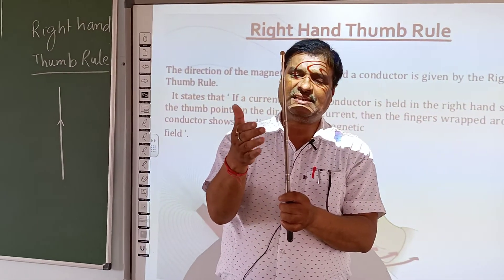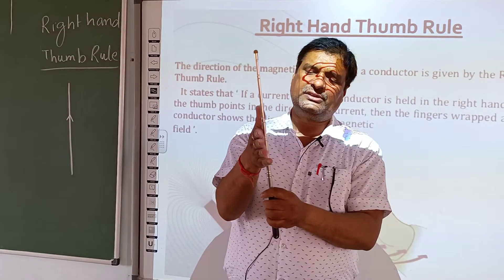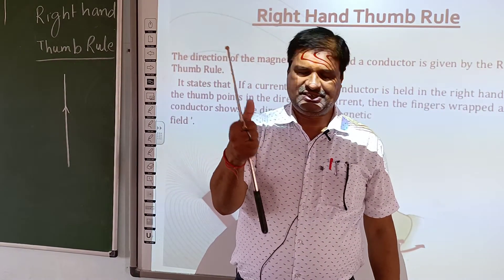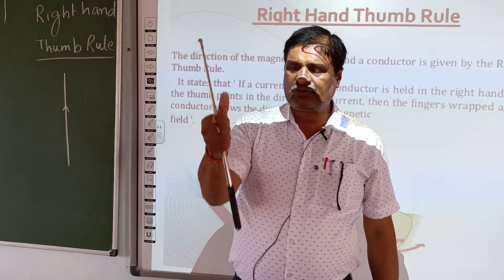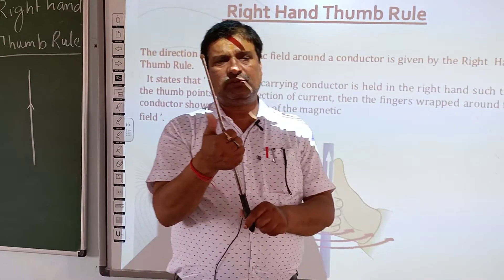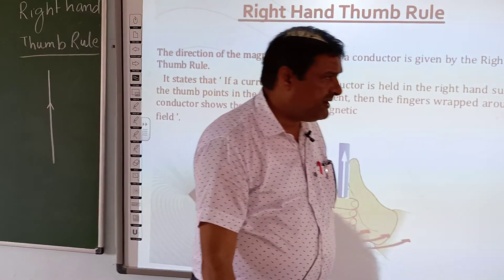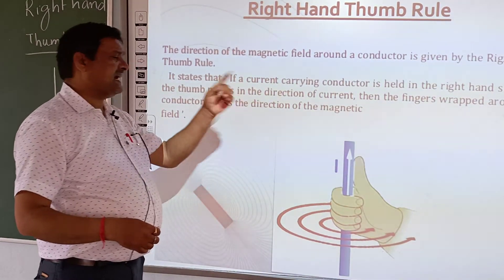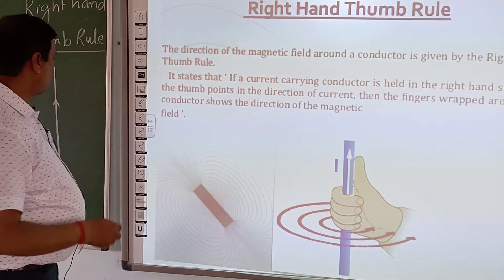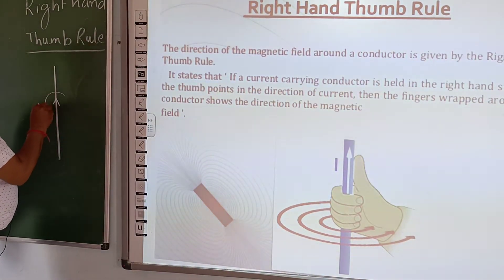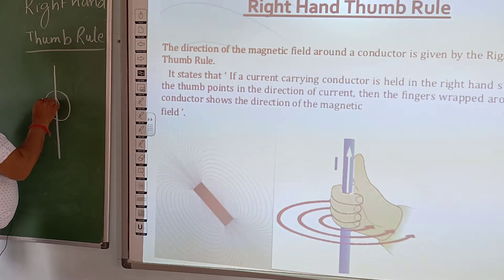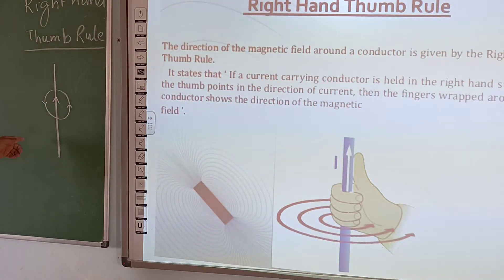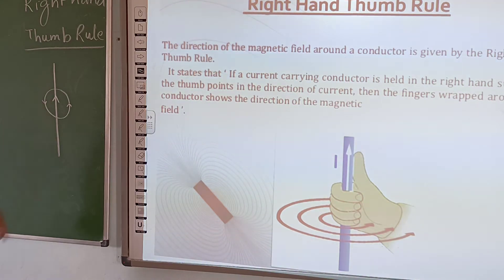Fingers grip the conductor. The fingers are making an anticlockwise direction. So the current is flowing in the upward direction, and when the current is moving upward, then the direction of the magnetic field is anticlockwise.